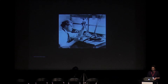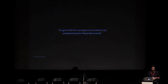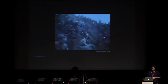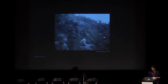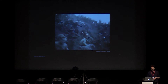The basic principle is to give birth to concepts and emotions by juxtaposing two disparate events. This is Strike. In Strike, Eisenstein cross-cuts the killing of the workers with the butchering of a bull. The intercutting between these two images creates an associative link of butchering in both instances, and this leads to a heightened emotional reaction in the audience. And here's a brief clip.